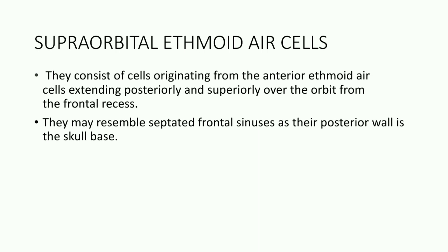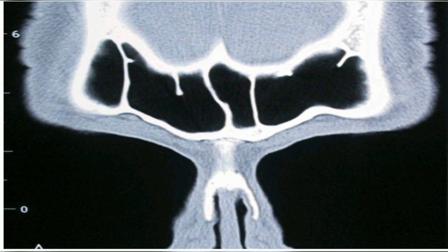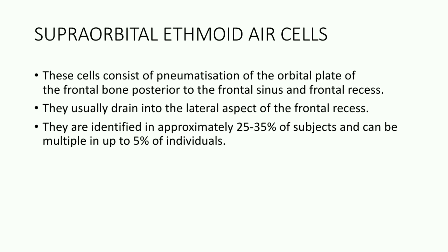The supraorbital ethmoidal air cells consist of cells originating from the anterior ethmoidal group of air cells, which extend posteriorly and superiorly over the orbit from the frontal recess. They may resemble septated frontal sinuses, as their posterior wall is the skull base. These cells are due to pneumatization of the orbital plate of the frontal bone posterior to the frontal sinus and the frontal recess.